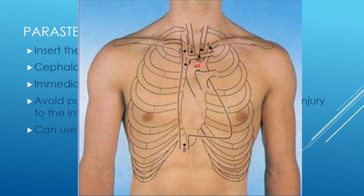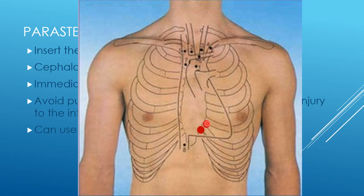We use anatomical landmarks — the angle of Louis marking the second rib — to count down to the second, third, fourth, fifth, and sixth intercostal space. We're aiming for the fifth and sixth, close to the sternum. This is not a big or easy space to access. We deliberately go lower rather than using the easier third or fourth intercostal space in order to be further from the origin of the left anterior descending artery, reducing the risk of damaging it, which could be extremely serious.